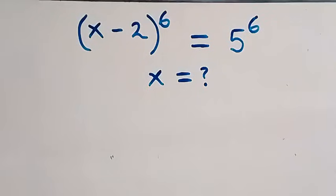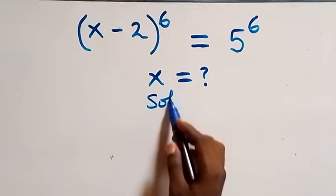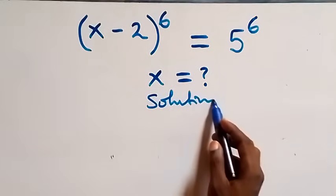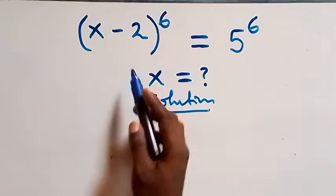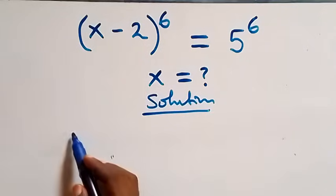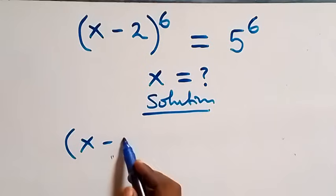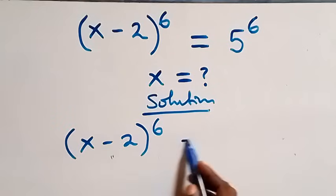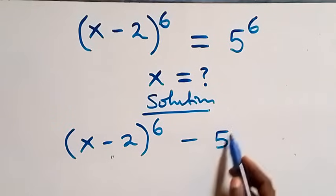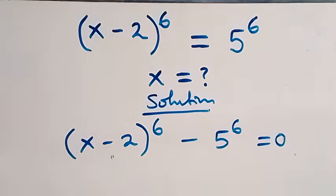Hello, you are welcome. How to solve this nice exponential equation. From what we have here, we take 5 raised to power 6 to the left hand side and we have x minus 2, raised to power 6, minus 5 raised to power 6, equals to 0.